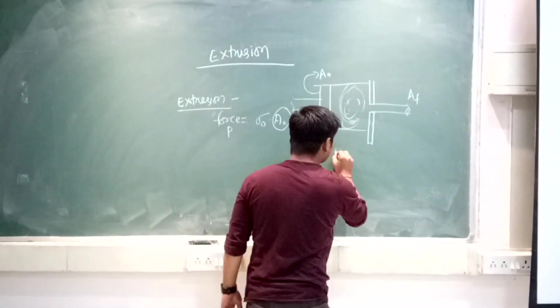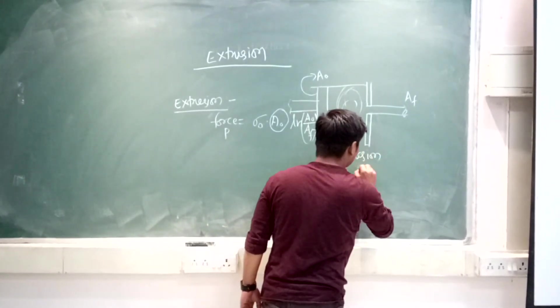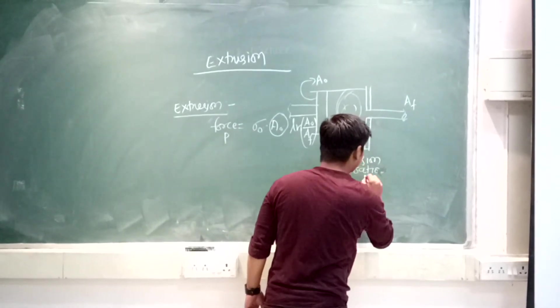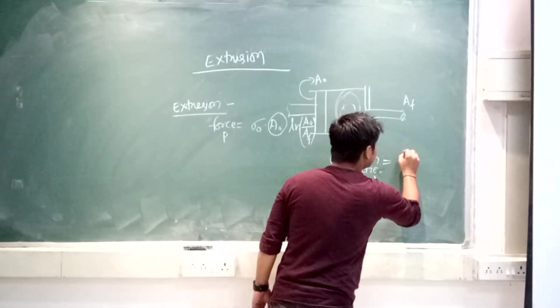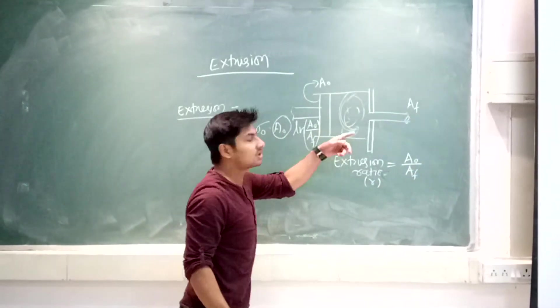This is known as extrusion ratio, denoted by small r. This is A₀ upon A final - how much reduction is there in terms of area, that is known as extrusion ratio.